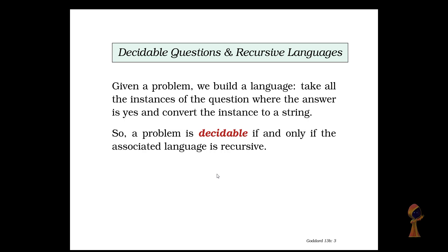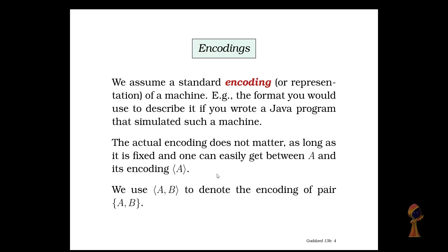If we have a problem, we want to build a language. That means we take all instances of the question where it's yes and then somehow convert that or encode it to a string. If a problem is decidable then the associated language is recursive, and if the associated language is recursive then the problem itself is decidable. That is termed as if and only if.